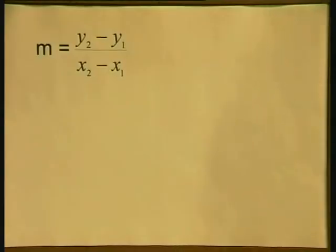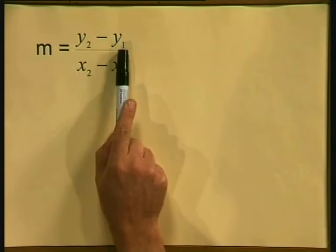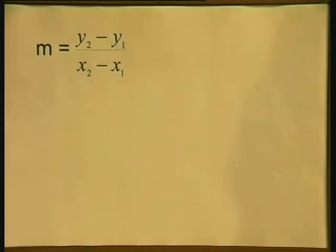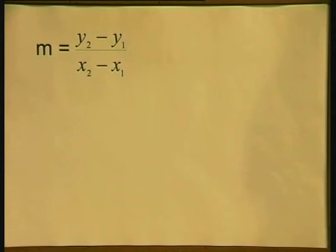Now everything in a mathematical formula has a meaning. Therefore the order of the x's and y's is important. This little 2 and 1 give instructions about which y's and x's we can use. You can interpret it like this.